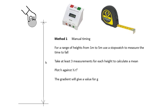Method one is timing using a stopwatch. For different heights — from one meter to five meters — you use a stopwatch to measure the time it takes to fall. You could use a stairwell or drop a ball from a window. For each height, take at least three measurements, calculate an average, then plot h against half t-squared. The gradient should be equal to g.